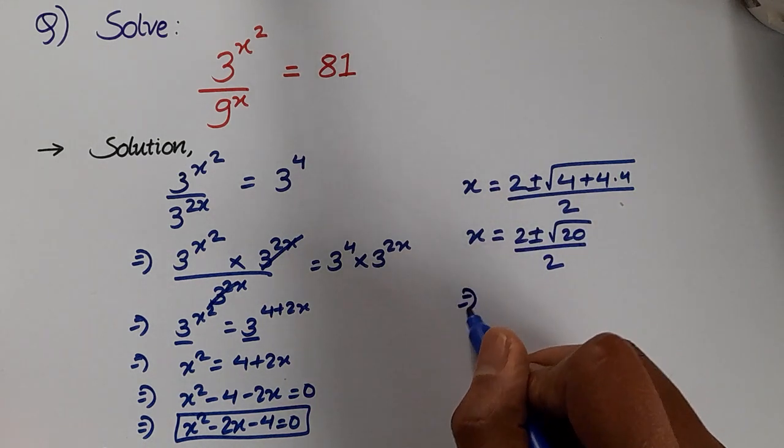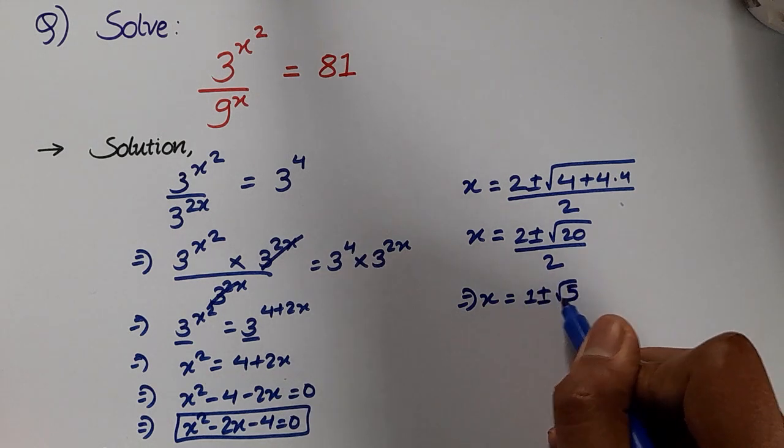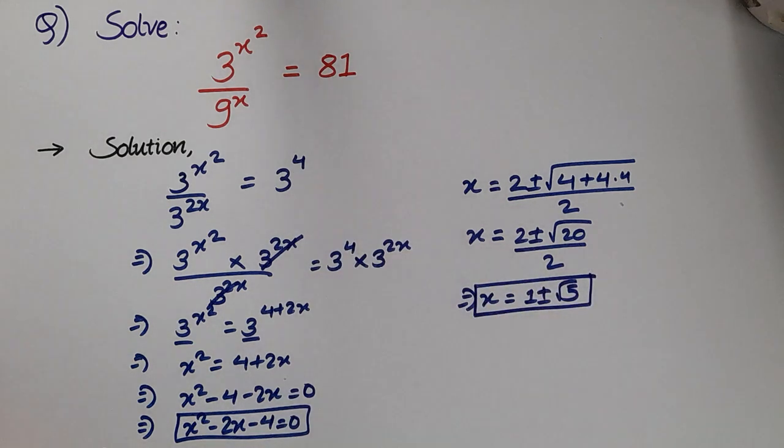Further solving, we have x = 1 ± √5. And that's our answer.